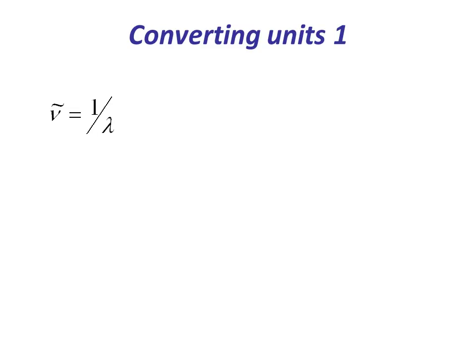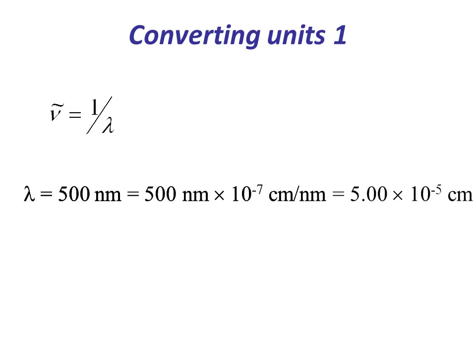For example, the wavenumber is just the inverse of the wavelength, but if you want the wavenumber in inverse centimeters, you can't just take the wavelength in nanometers and invert it. Instead, you first need to convert the wavelength from nanometers to centimeters. So for example, light that has a wavelength of 500 nanometers corresponds to light with a wavelength of 5 by 10 to the minus 5 centimeters.